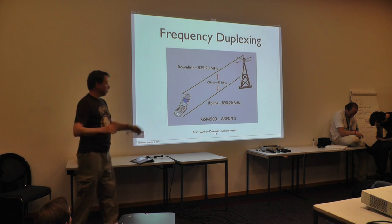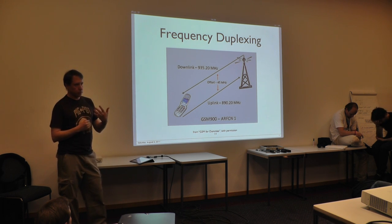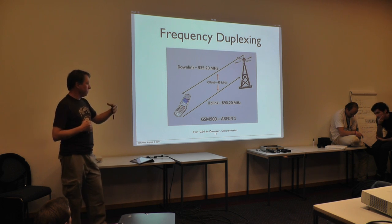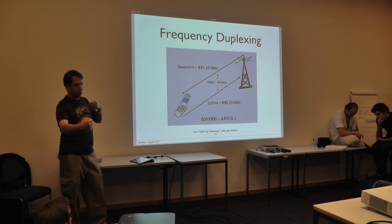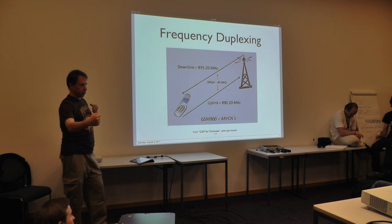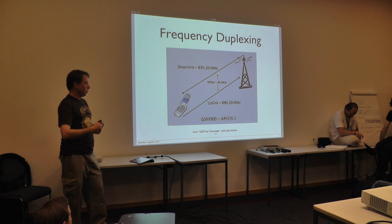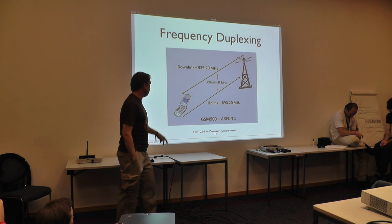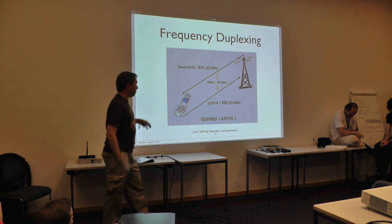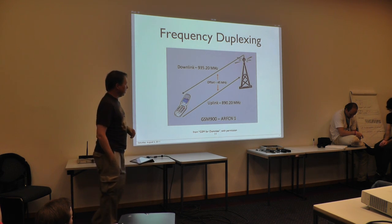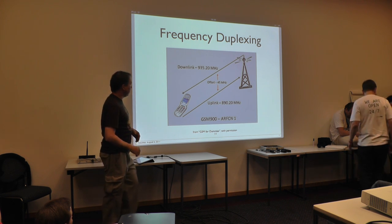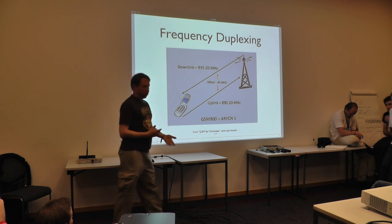GSM, like nearly all cellular systems, is frequency duplexed — the client device and base station transmit on different frequencies so they can transmit and receive simultaneously. The uplink is the signal going from the handset to the base station; the downlink goes from the base station to the handset. When you specify a particular ARFCN, you're specifying a pair of frequencies with a fixed offset.